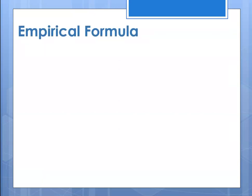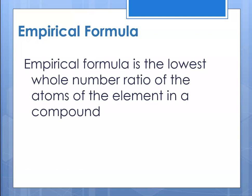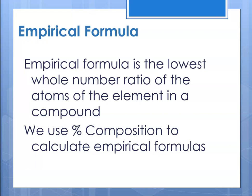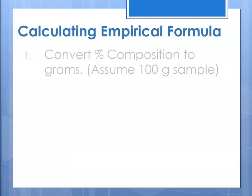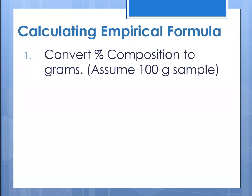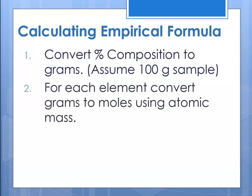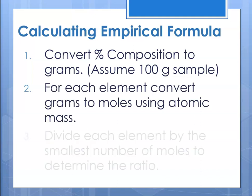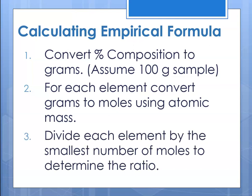The first thing you typically calculate is the empirical formula — the lowest whole number ratio of the atoms of each element in a compound. We use percent composition to calculate empirical formulas. The steps are: take the percent composition, convert to grams by assuming 100 grams, then for each element convert grams to moles using the atomic mass, and finally divide each element's moles by the smallest number of moles to get the whole number ratio.